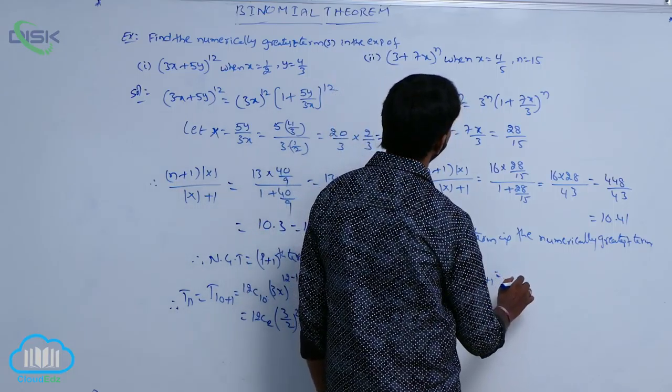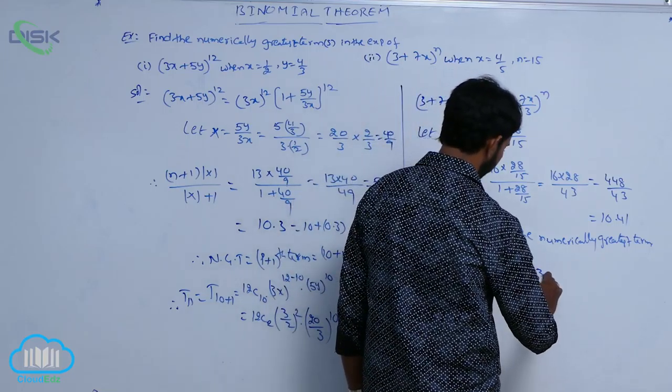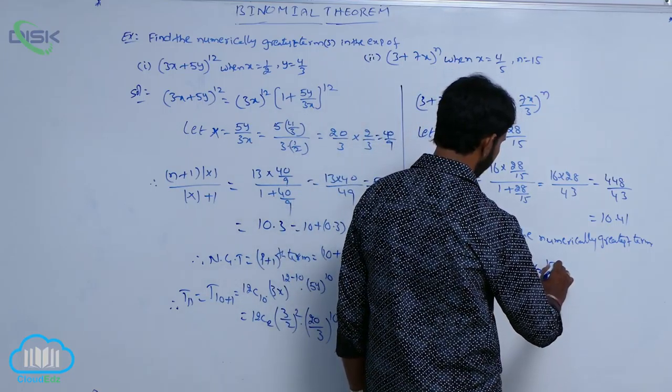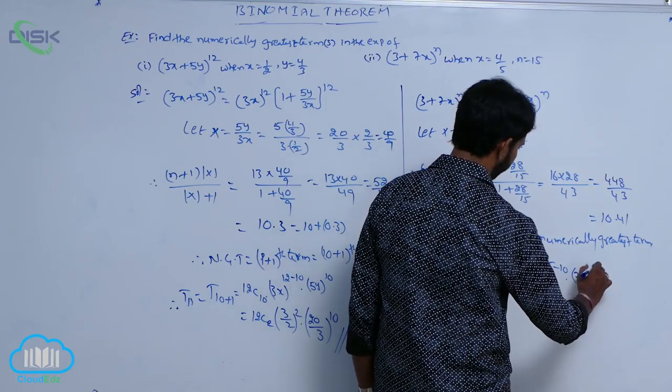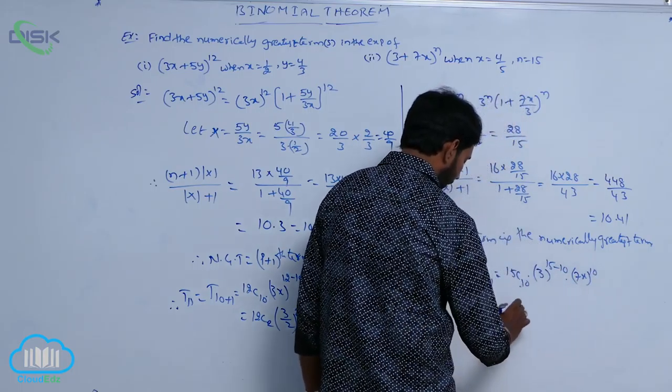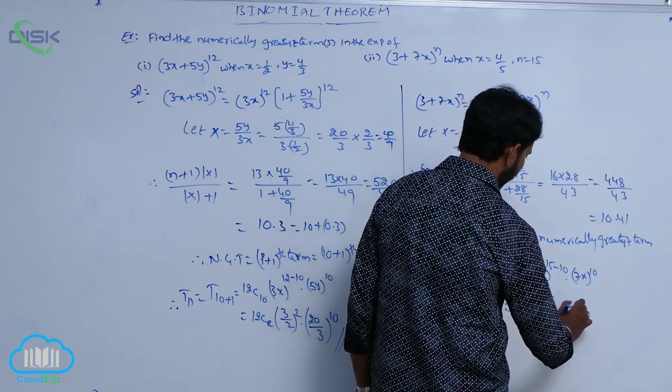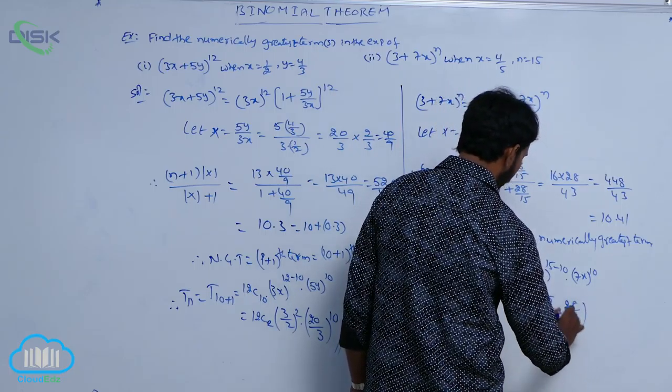15 say 10 into 3 power 15 minus 10 into 7x whole power 10. There is equal to 15 say 5 into 3 power 5 into here x equal to 4 by 5, that is 28 by 5 whole power 10.